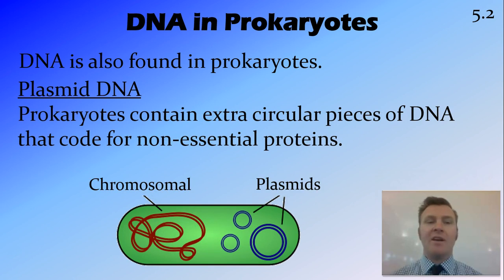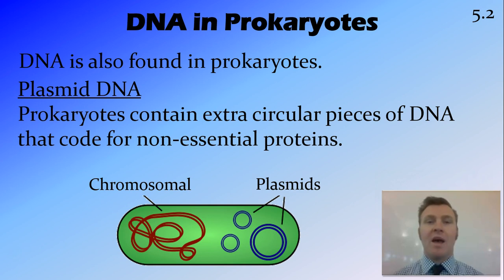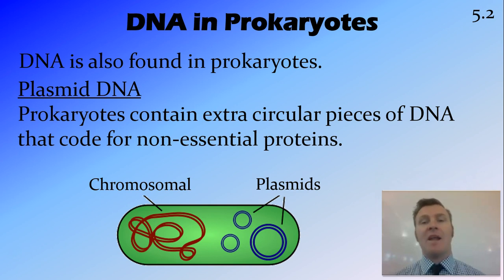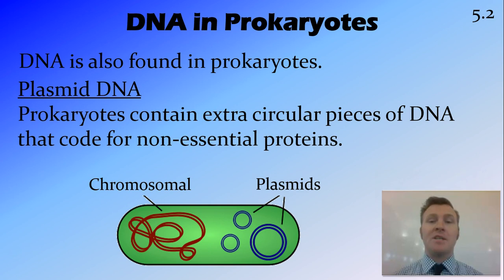Another place that DNA is found in prokaryotes is in circular formations called plasmids. These plasmids are smaller than the chromosomal DNA and contain extra pieces of DNA that code for extra proteins. A lot of these proteins are associated with survival — mutations that have come across as part of evolution. These can be passed from one prokaryote to another in horizontal gene transfer, so a plasmid conferring antibiotic resistance can be injected into another prokaryote, making that organism resistant as well. They are much smaller and simpler, but very important pieces of DNA in prokaryotes.